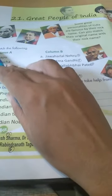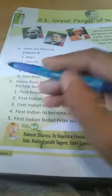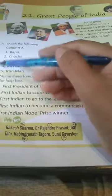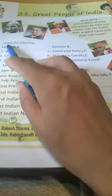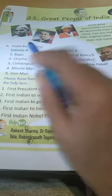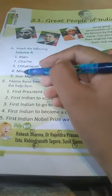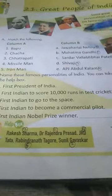Now Exercise A and Exercise B are given here. Now match the following. You have to match the following. You see here 1, 2, 3, 4, 5 in Column A. How many numbers? 5 numbers. Column B.